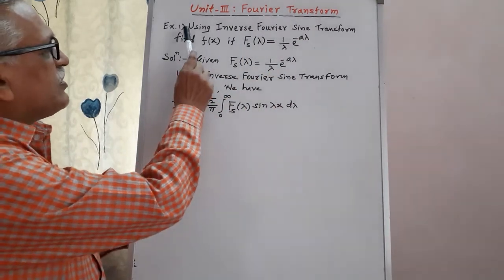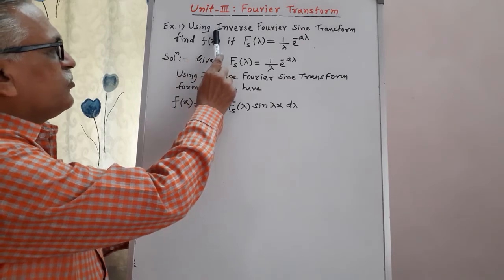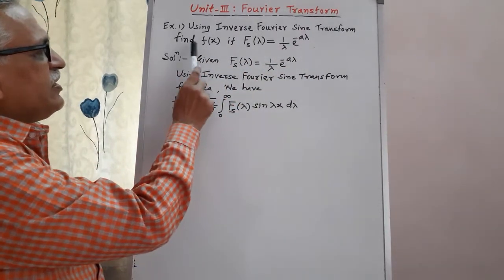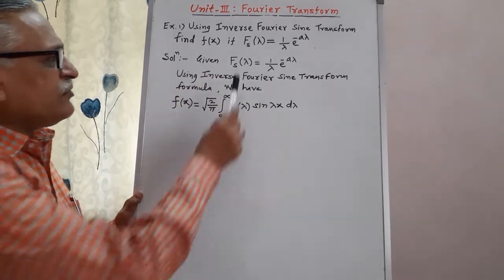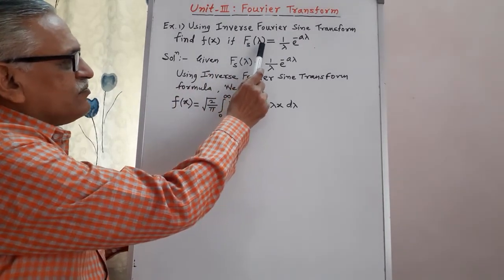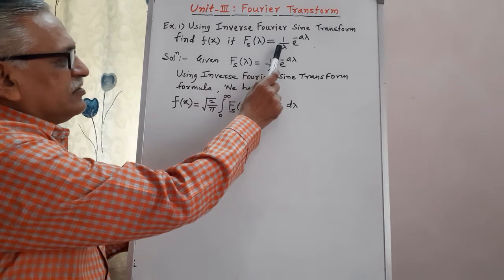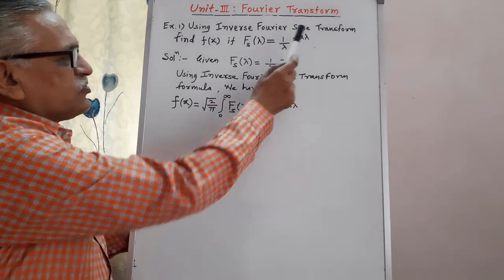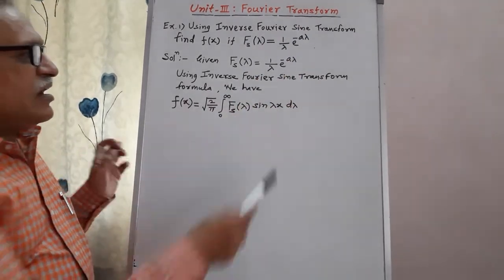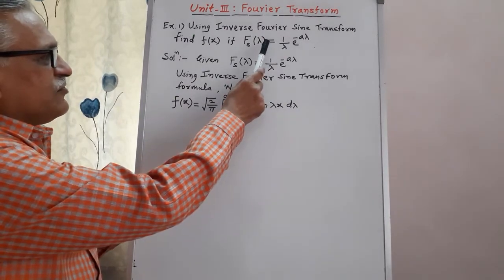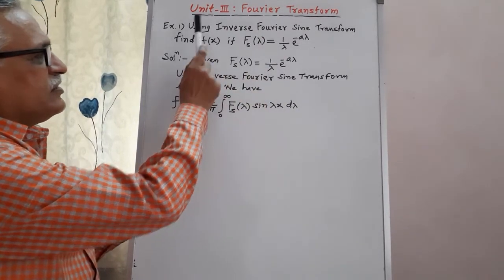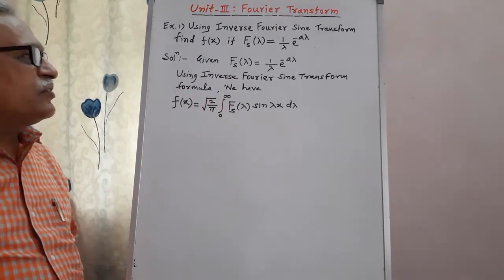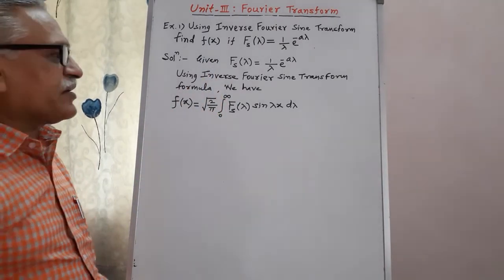Let us see the first example using inverse Fourier sine transform: find f of x if Fourier sine transform, that is fs(λ), is equal to 1 by λ into e raised to minus a λ. Using this, we are required to find f of x using the inverse Fourier sine transform technique.